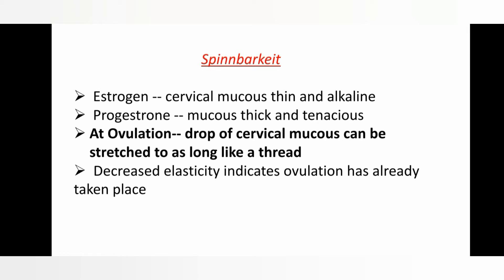The second indicator is Spinnbarkeit. It is based on the physiological phenomenon that estrogen makes cervical mucus thin and alkaline. During the proliferative phase when estrogen is high, cervical mucus is thin and alkaline, and during the secretory phase when progesterone is high, the mucus is thick and tenacious. Spinnbarkeit is defined as: at the time of ovulation, a single drop of cervical mucus can be stretched into a thread up to 10 centimeters. Decreased elasticity indicates that ovulation has already taken place.